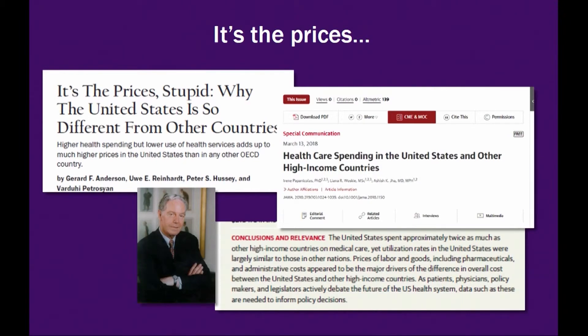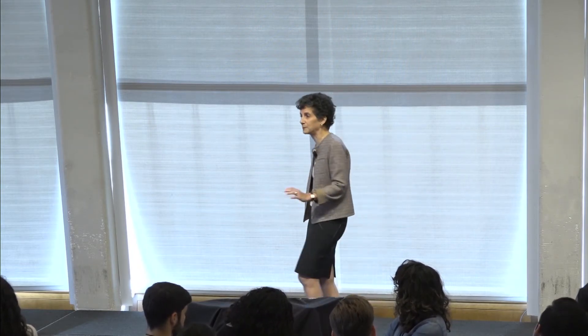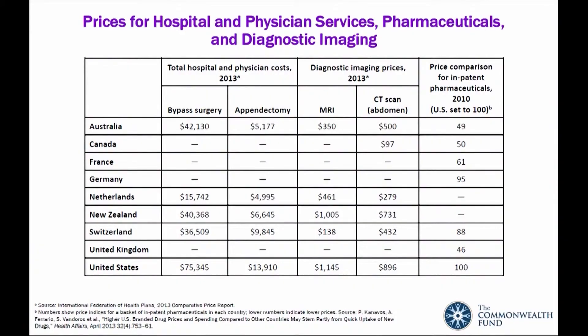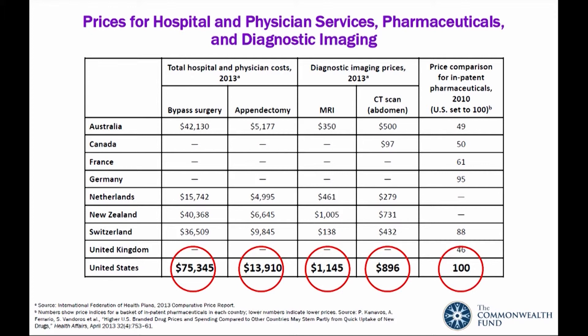If any of you travel to the countries on my slide, hotel rooms and restaurants are not much more expensive than here in New York City — things are pretty much the same. But in health care, that's not true. We pay much higher prices. Here are some different kinds of price measures from an international comparison: hospital cost, diagnostic imaging, and inpatient pharmaceuticals. We are just way, way more expensive across the board than anybody else, even Switzerland.